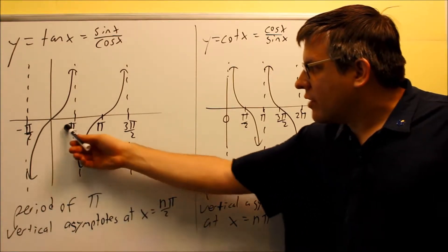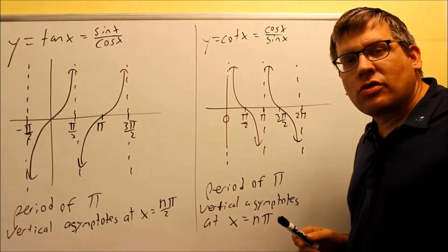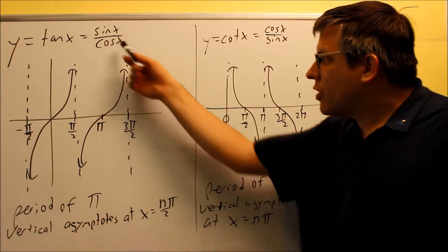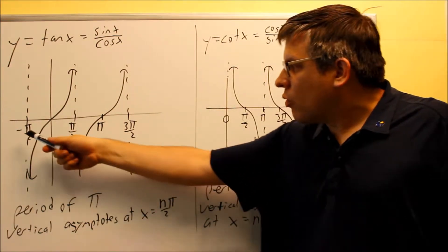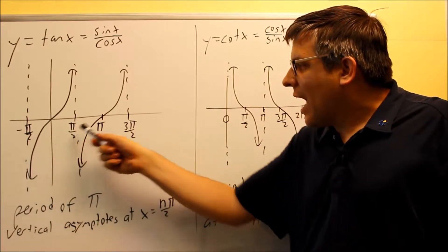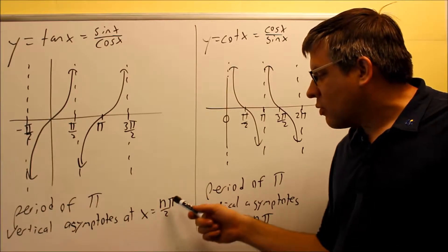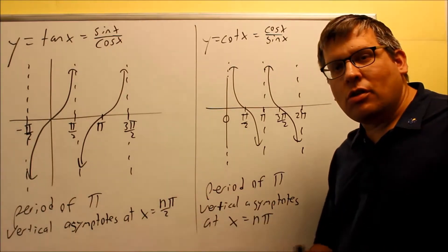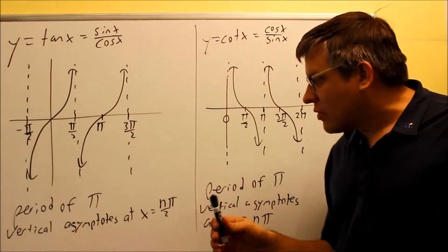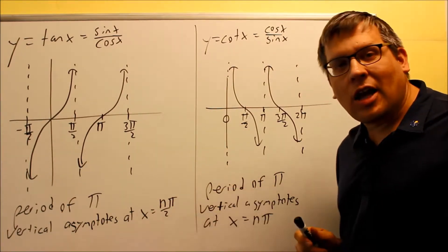So that's why on this graph here, pi over 2 and 3 pi over 2, you notice that we have vertical asymptotes there because that's where you're dividing by zero. Now we also have another one over here. So basically, the way it works is all the half pi's, that's where you have vertical asymptotes. The vertical asymptotes will be at x equals n pi over 2. So basically, n is an integer, it can be anything, negative numbers or positive numbers. So if n is an integer, you can write the vertical asymptotes like that, n pi over 2.